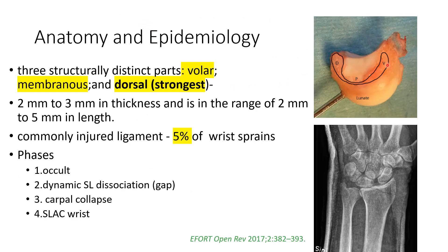Here once again you can see the scapholunate ligament. It is one of the commonest ligaments to be injured, accounting for about 5% of injuries of the wrist, and it can be classified as occult, dynamic, with significant carpal collapse, and a slack wrist being the most severe form. Here you can see there is a widening of the gap, which is an important sign.